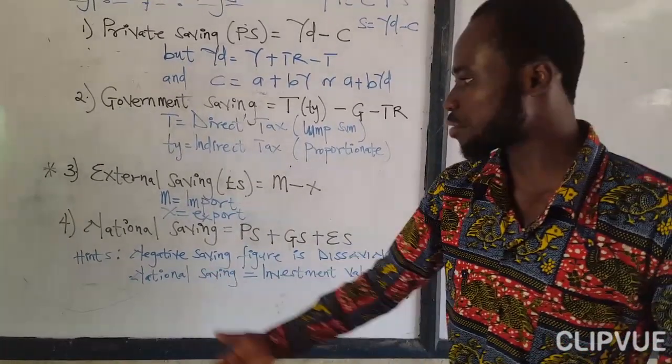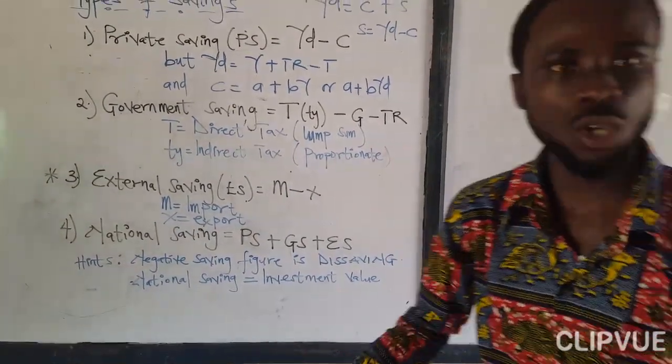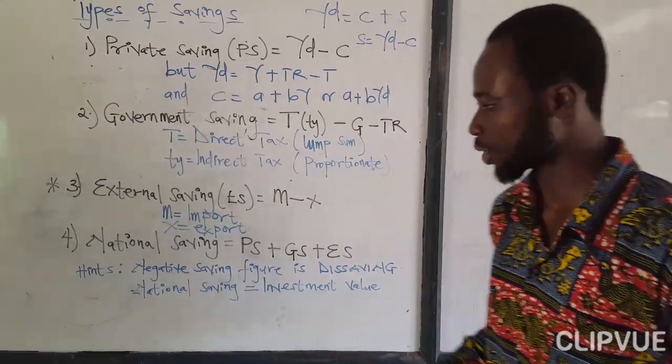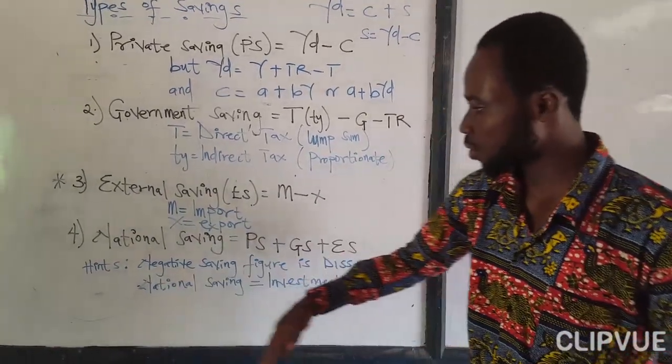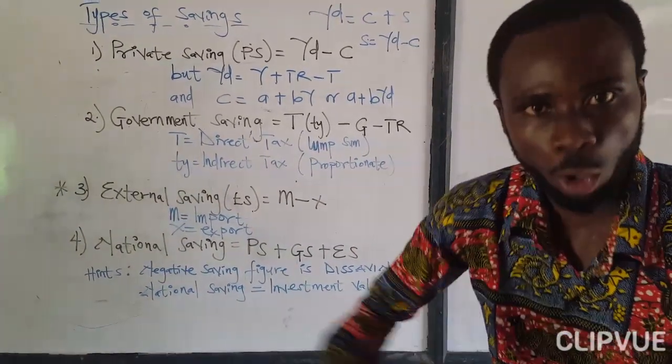Now it is however very important to know that in the computation of the savings, one way or the other you might get negative figures. When you get negative savings, you are not wrong. It means the savings. It means that they are not savings, but they are rather borrowing. I hope it makes sense.